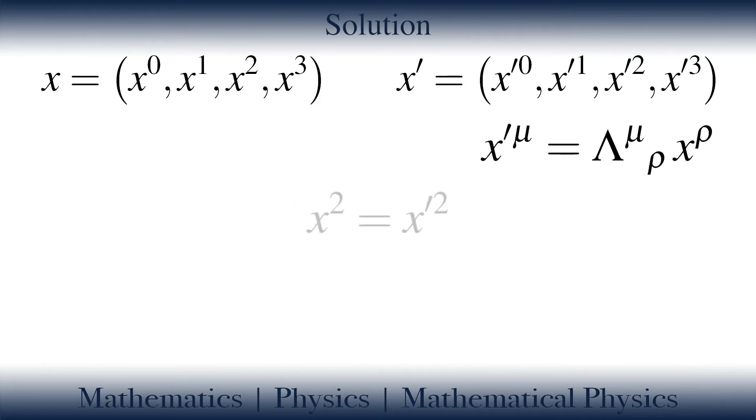Now, we equate the Minkowski norms of these two points. By employing the definition of the Minkowski norm, we can write each norm by the use of the metric and the components of each spacetime vector.